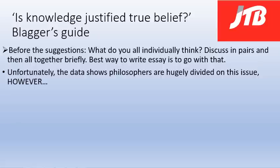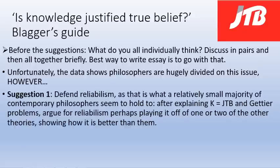Some very distinguished philosophers actually think that knowledge is indefinable, perhaps following a Wittgensteinian line of thinking about family resemblance between concepts. However, there is a small majority, at least in the Phil Papers survey, of philosophers that go for reliabilism. So cynically, you could set out to defend reliabilism if this essay comes up. After explaining K equals JTB and what that means, and the Gettier problems — briefly, because remember: argue your case, don't just give information — then argue for reliabilism, playing it off against one or two other theories.